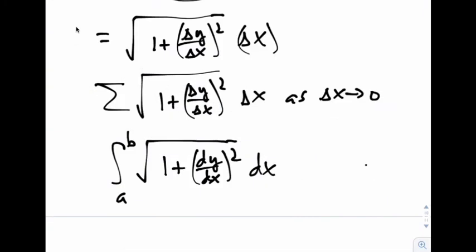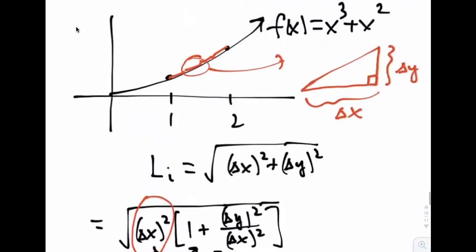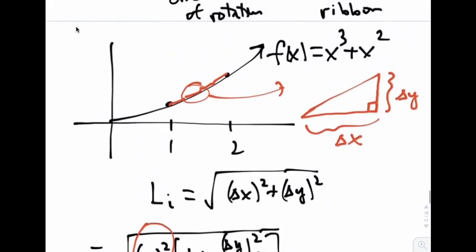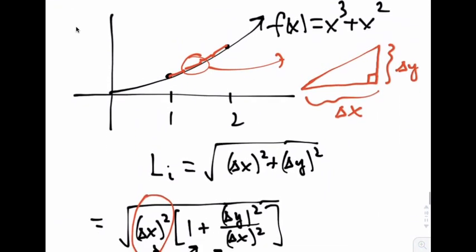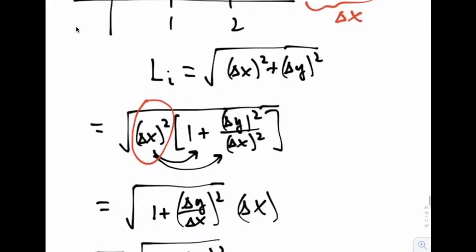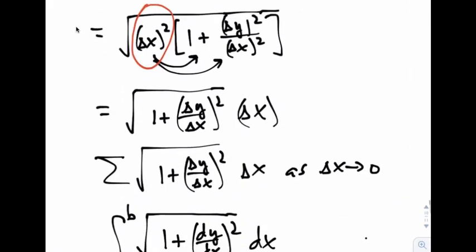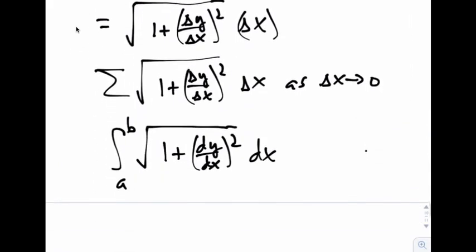So that's really the big idea. The idea is we're chopping it up into tiny little pieces, and we're adding up all of those parts. And that's how we end up getting this handy little integral that lets us calculate arc length.